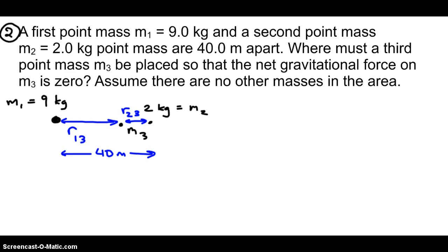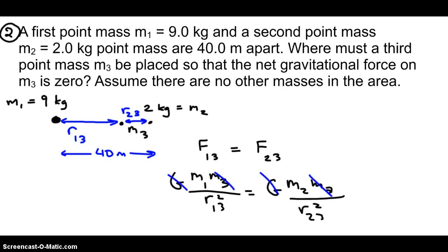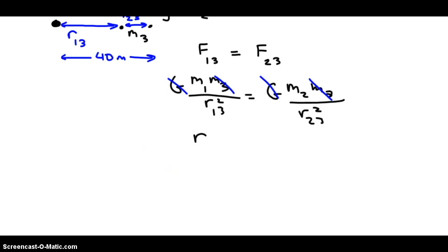Now we are placing m3 so that the force of gravity, the force of 1 pulling on 3, balances the force of 2 pulling on 3. So for each of these I'm going to make the replacement using Newton's law of gravitation for the left side and also for the right side. Once again, m3 cancels out, G cancels out. So if I rearrange this, I have r23 equals radical m2 over m1, and then outside of the radical, not underneath but outside, is that.